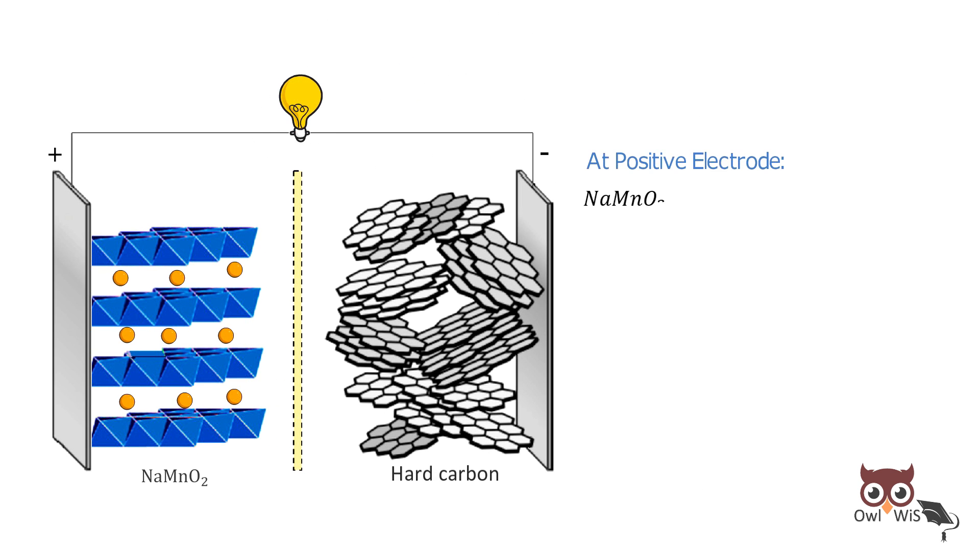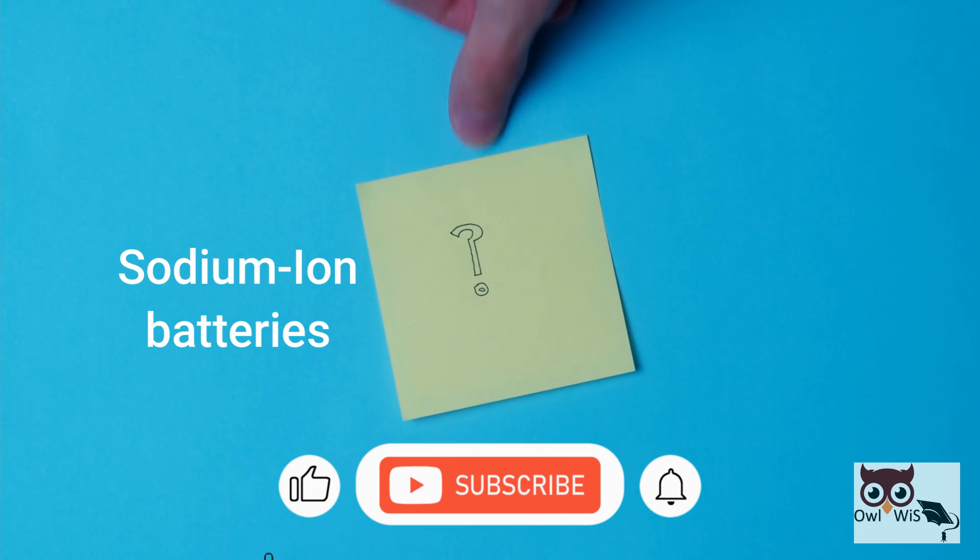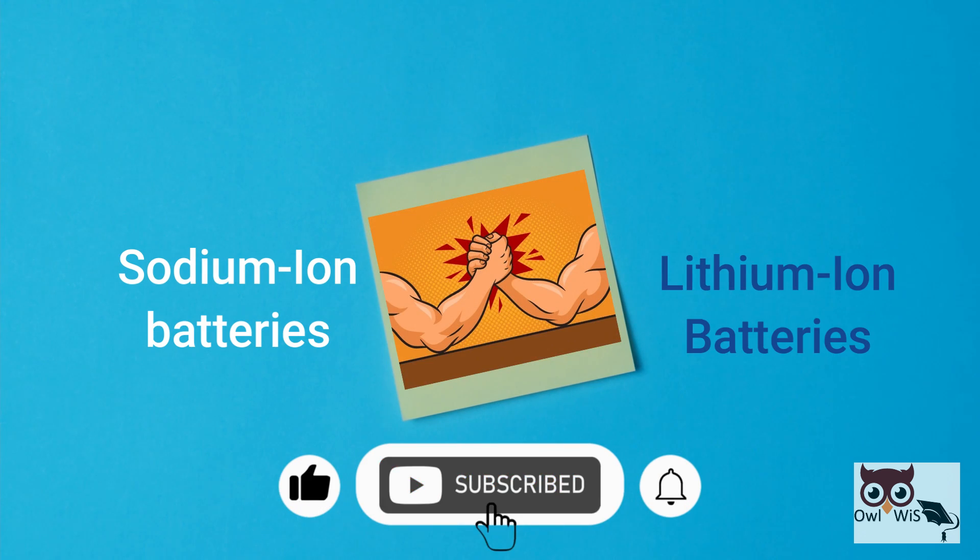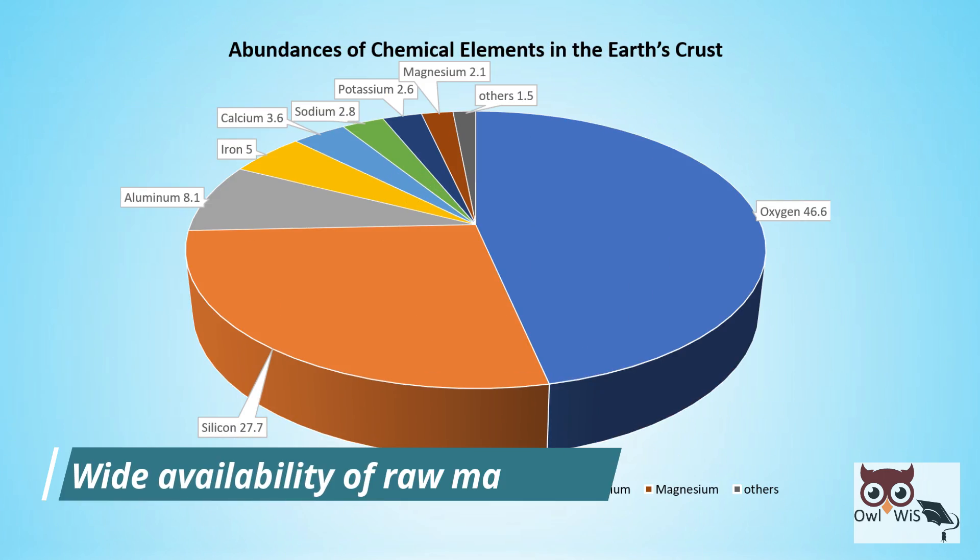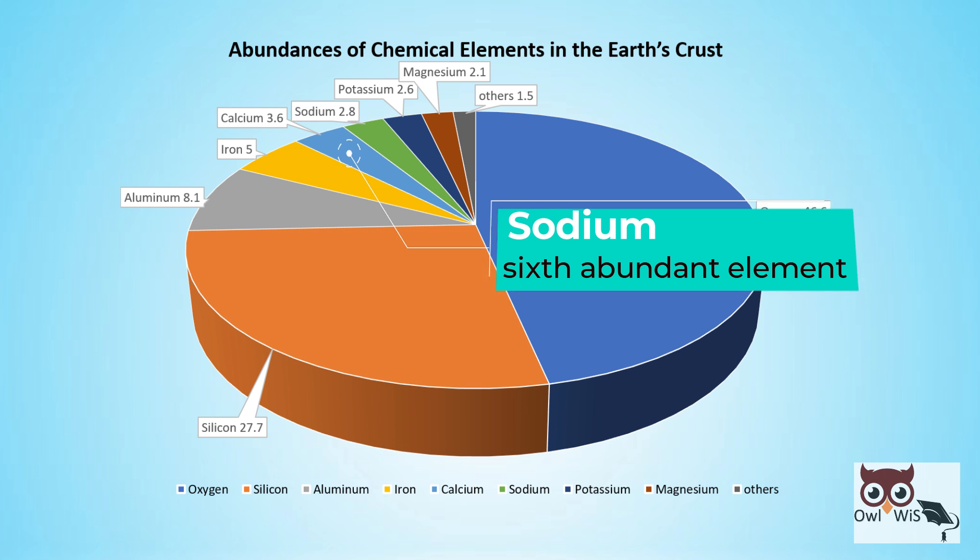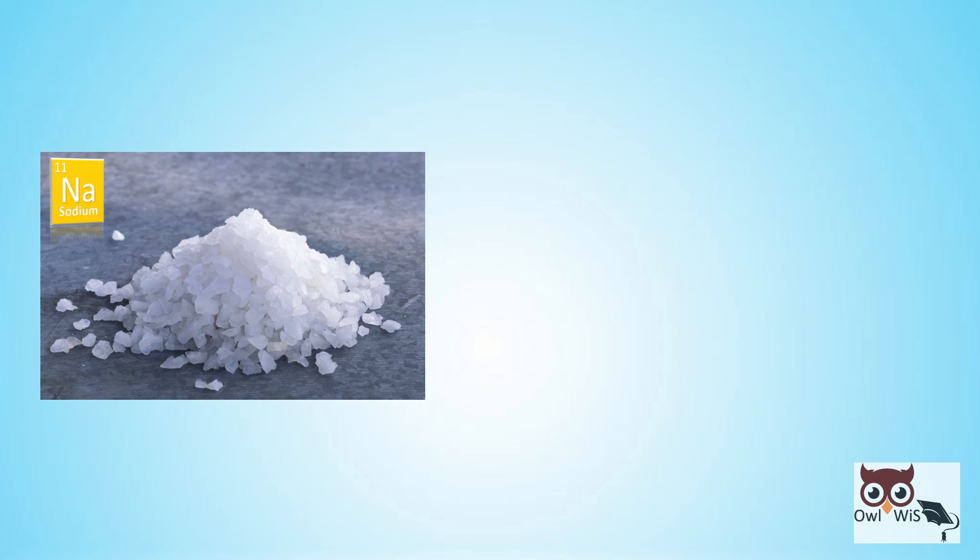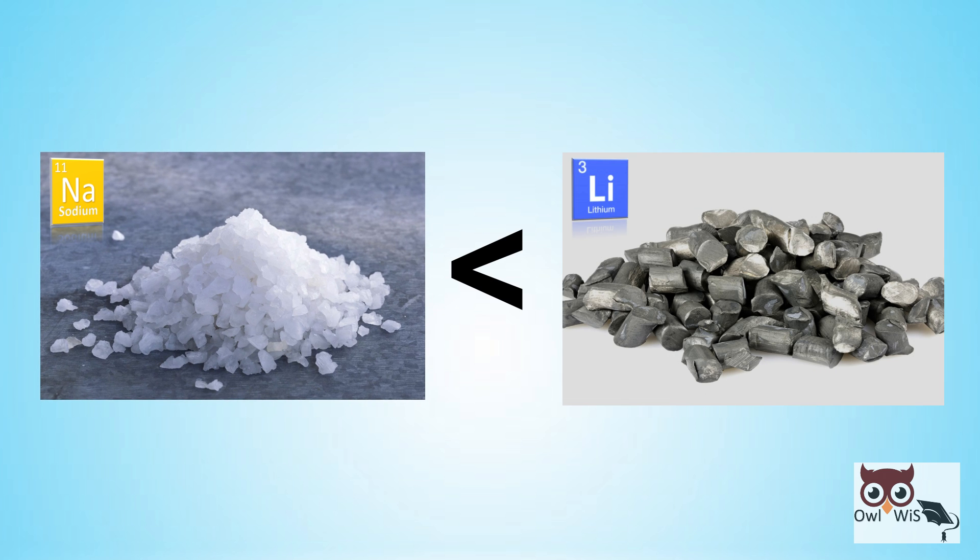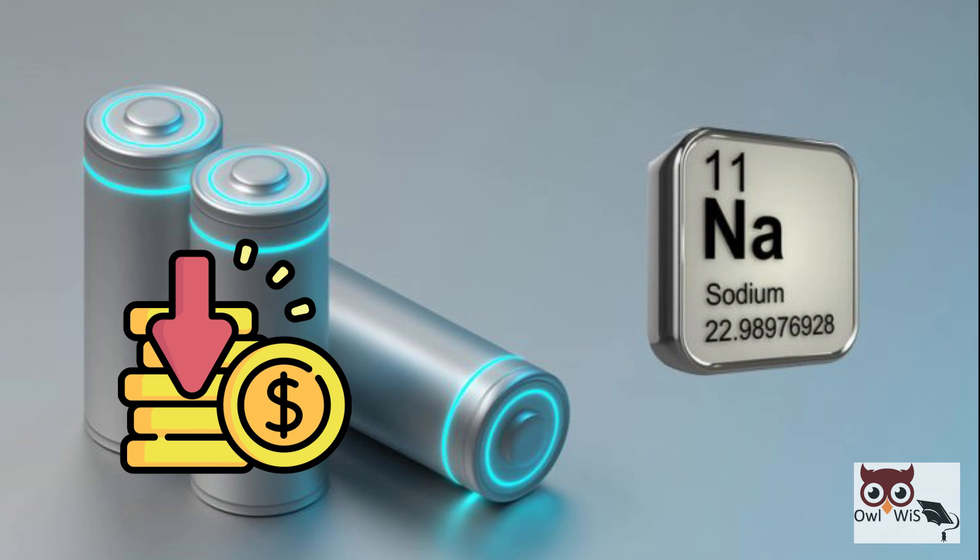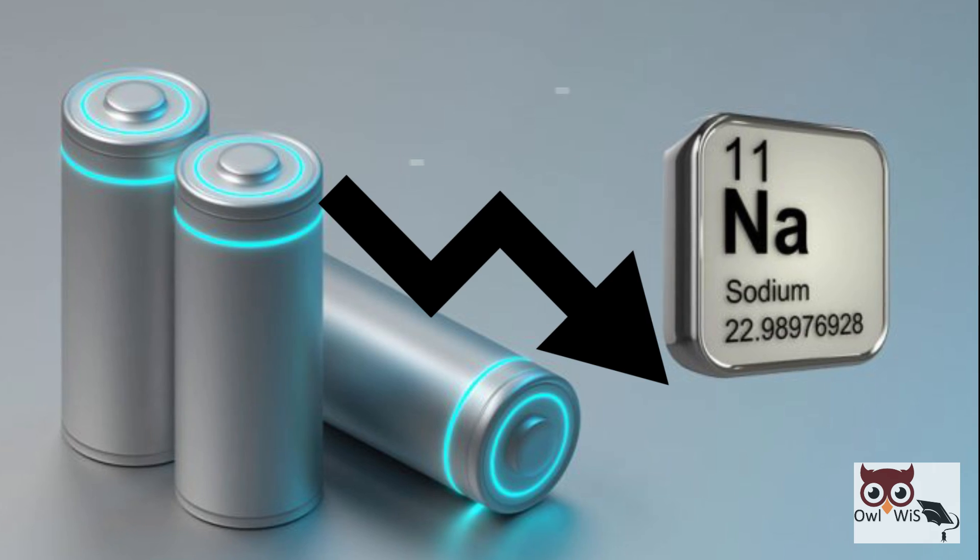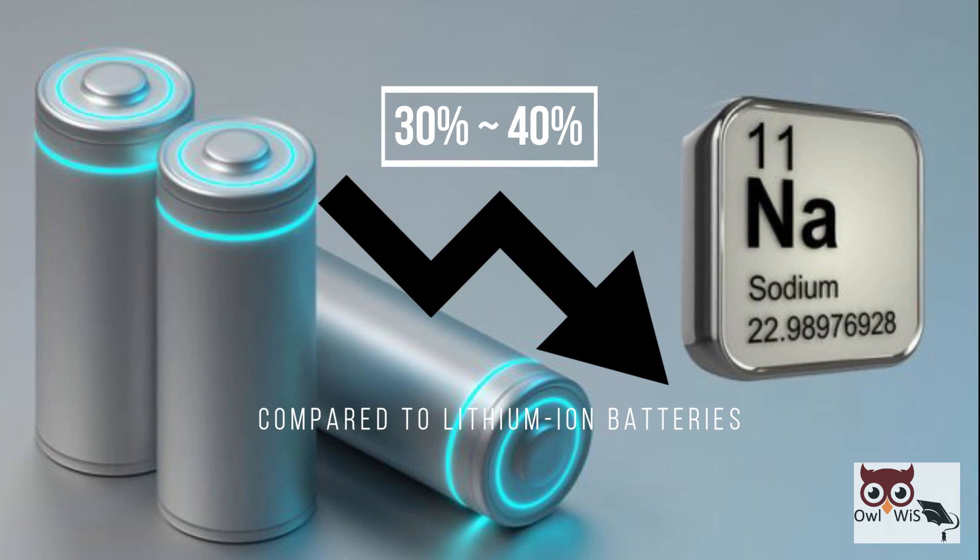Do you know what makes sodium ion batteries a strong contender to lithium ion batteries? The main reason is the wide availability in nature of its constituent raw materials. Sodium, in fact, is the sixth most abundant element in the earth's crust. Abundant availability of sodium makes it less costly than lithium, so the final cost of sodium ion batteries will reduce 30 to 40 percent compared to lithium ion batteries.